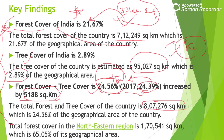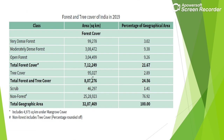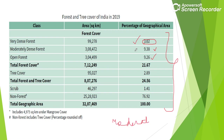For the North Eastern region, total forest cover is 1,70,541 square kilometers, which is 65% of the area of that region. Regarding classification within forest cover: Very Dense Forest is 3.02%, Moderately Dense Forest is 9.18%, and Open Forest is 9.26%. This sequence is frequently asked — Moderately Dense Forest is the highest, followed by Open Forest, then Very Dense Forest.